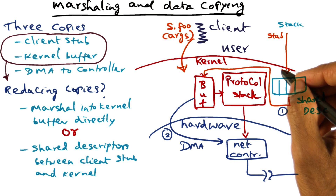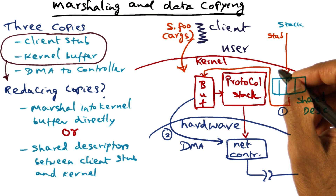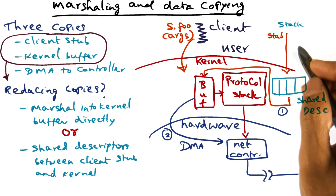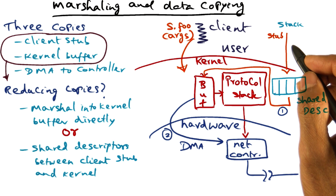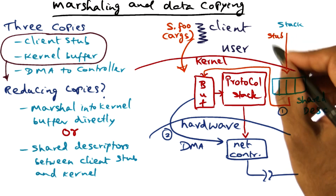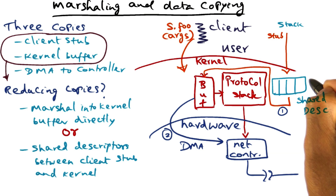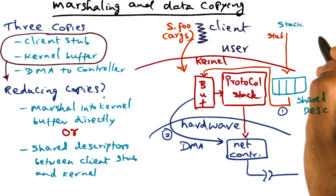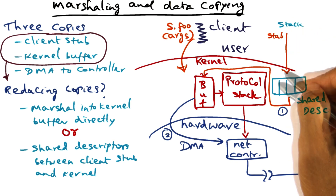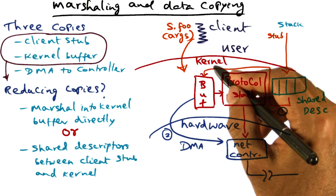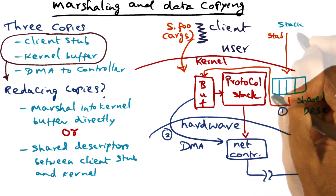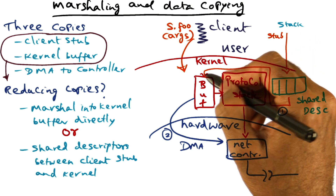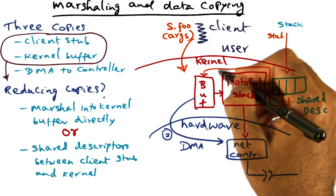Because usually data structures are organized contiguously. If you have an integer, it is occupying four contiguous bytes in memory. If you have a floating point number, it is occupying some number of contiguous bytes in memory. Therefore, what the stub is doing is creating the shared descriptor that provides the information to the kernel about the layout of the arguments on the stack. Once the layout of the arguments on the stack is known to the kernel, it can take these contiguous data items described by the shared descriptor and create a contiguous packet in its internal buffer.